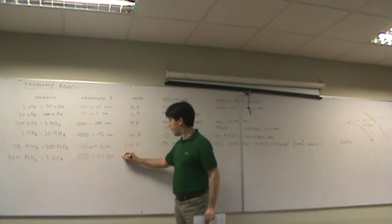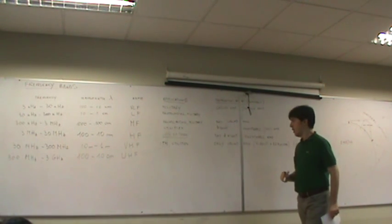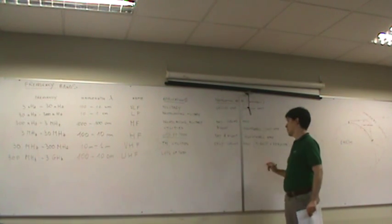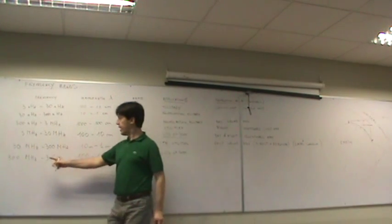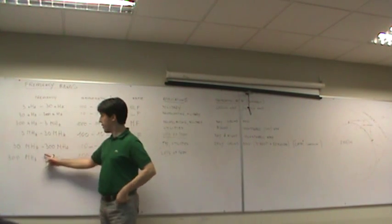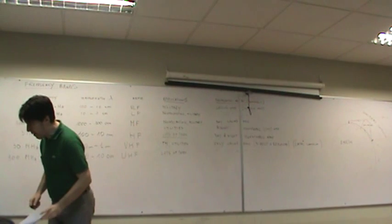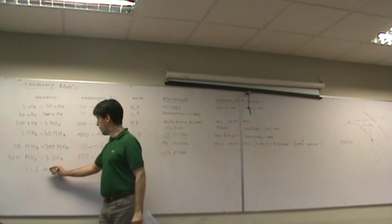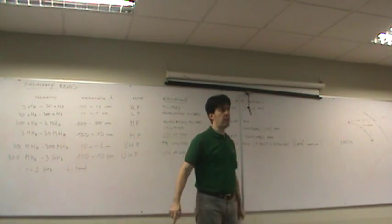Above VHF, this band is usually called UHF — ultra-high frequencies. We are running out of adjectives. Again, only ground wave propagation with direct and reflective waves. There is a little bit of overlap in definitions, because above 1 GHz frequencies are also called microwave bands. For reference, 1 to 2 GHz is the so-called L band. Here you find the GPS system, for example, at around 1.8 GHz.